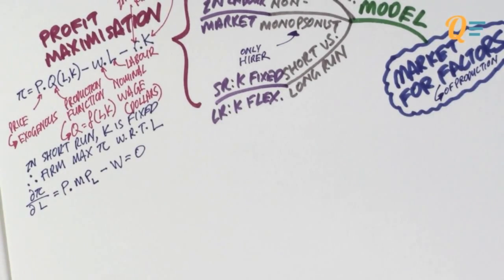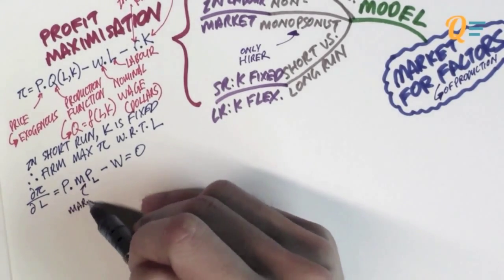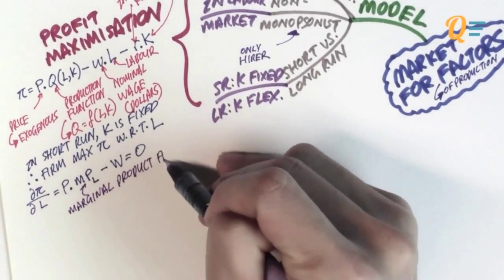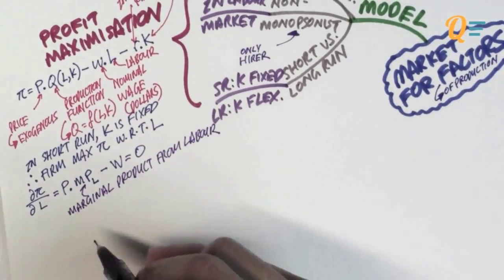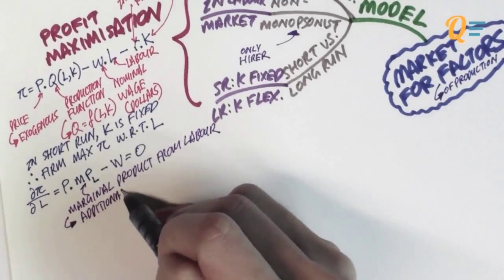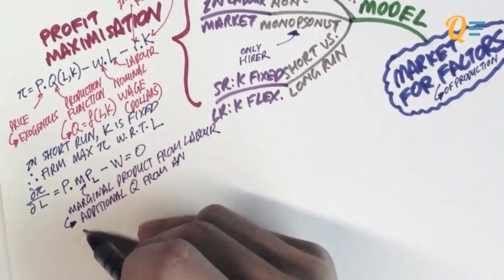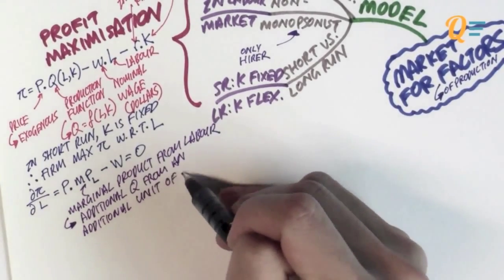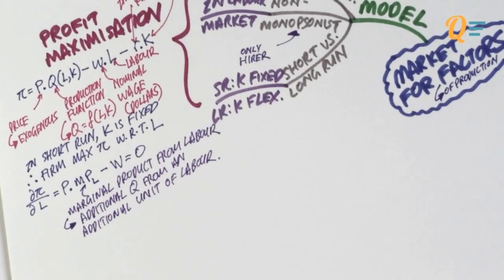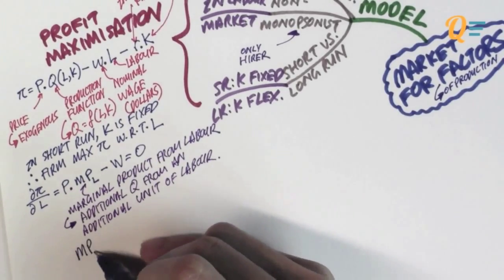I'm going to differentiate this function with respect to labour, and we're going to get the price multiplied by the marginal product of labour minus the nominal wage equals to zero. MPL here refers to the marginal product from labour, and it refers to the additional goods or products from adding an additional unit of labour into your production.